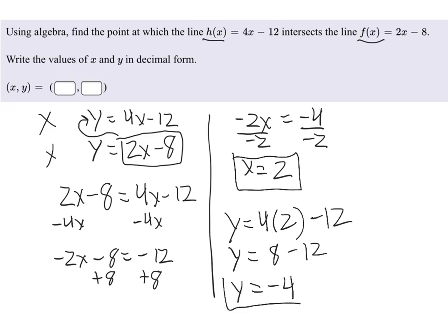So there is the second half of our solution. Putting those two things together, we would say that the point of intersection between the two lines is the point 2, negative 4.